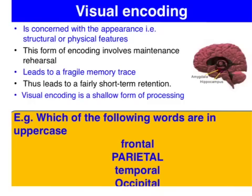Starting with visual encoding, look at the example at the bottom — which of the following words are in uppercase? We visually scan the images in front of us and can clearly see that it is the second option, 'parietal,' that is in uppercase. This type of encoding is merely concerned with the appearance of the stimuli or the physical features, and we're using maintenance rehearsal to retain that visual information in our short-term memory, which leads to the formation of a fragile memory trace.